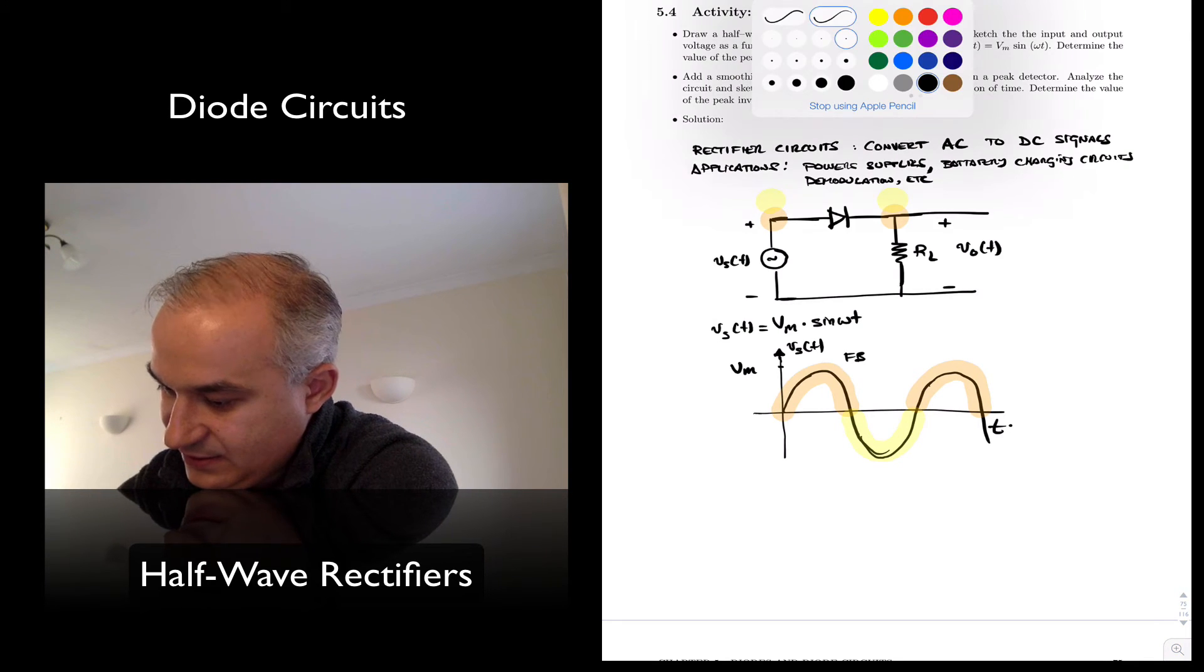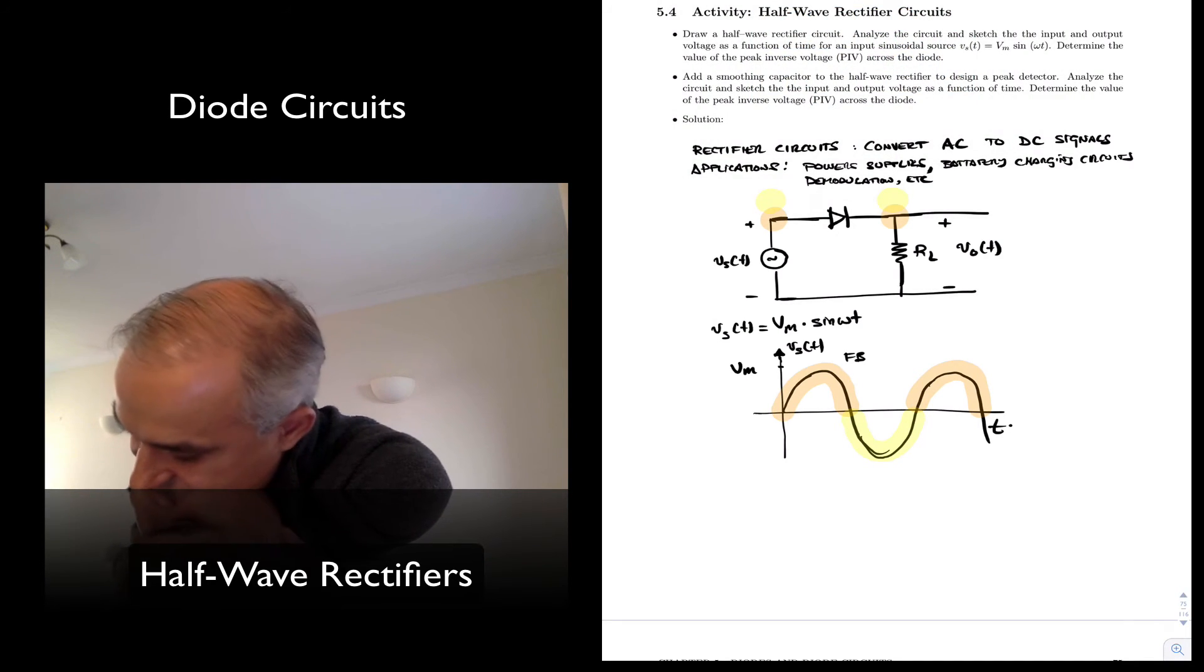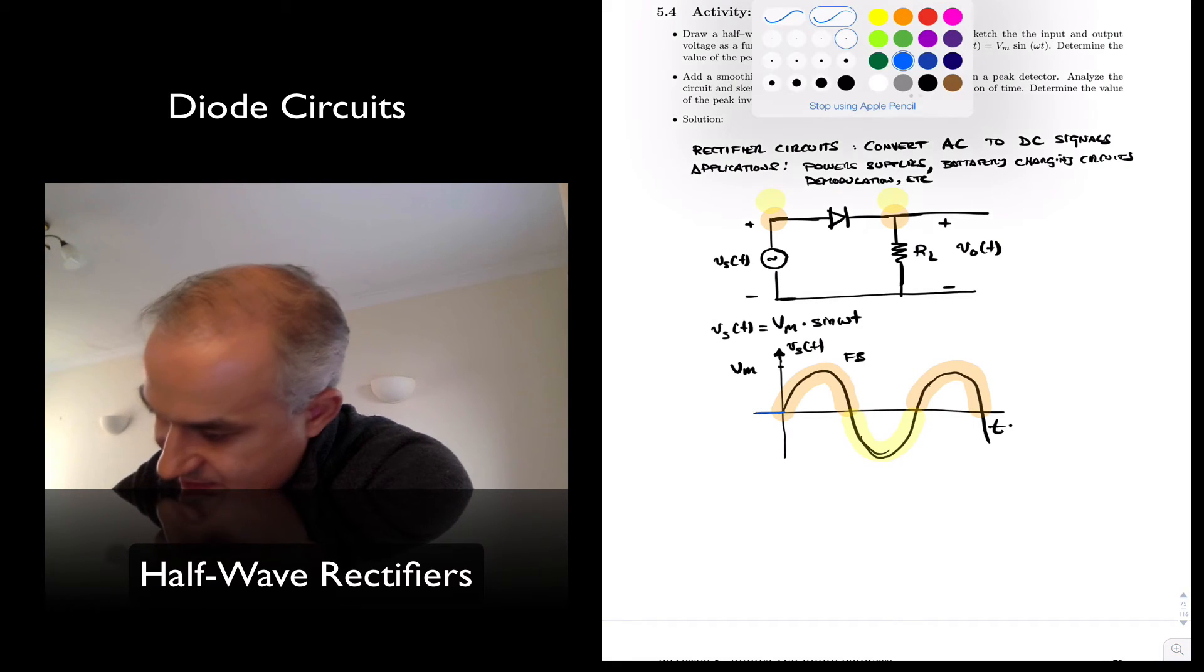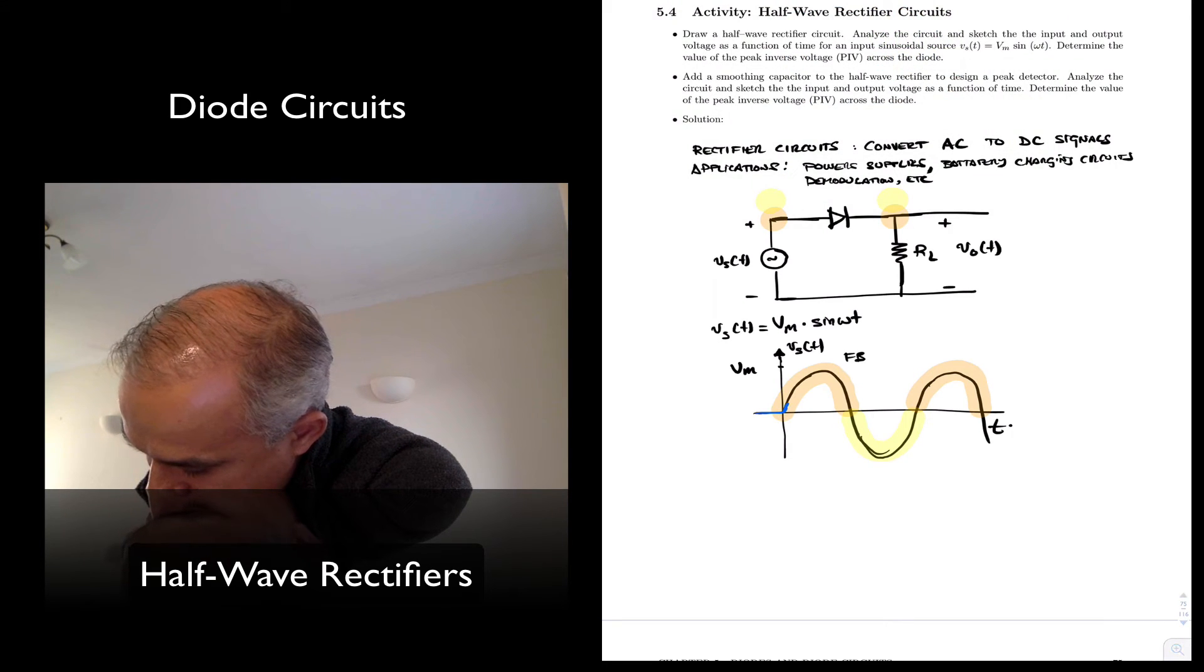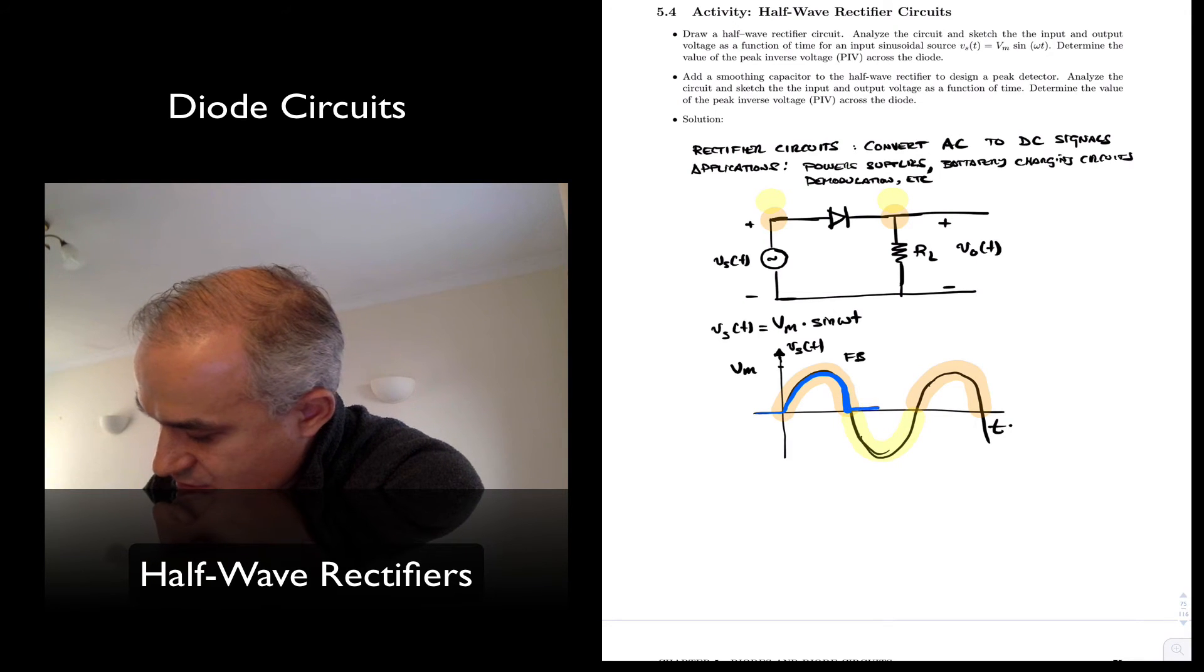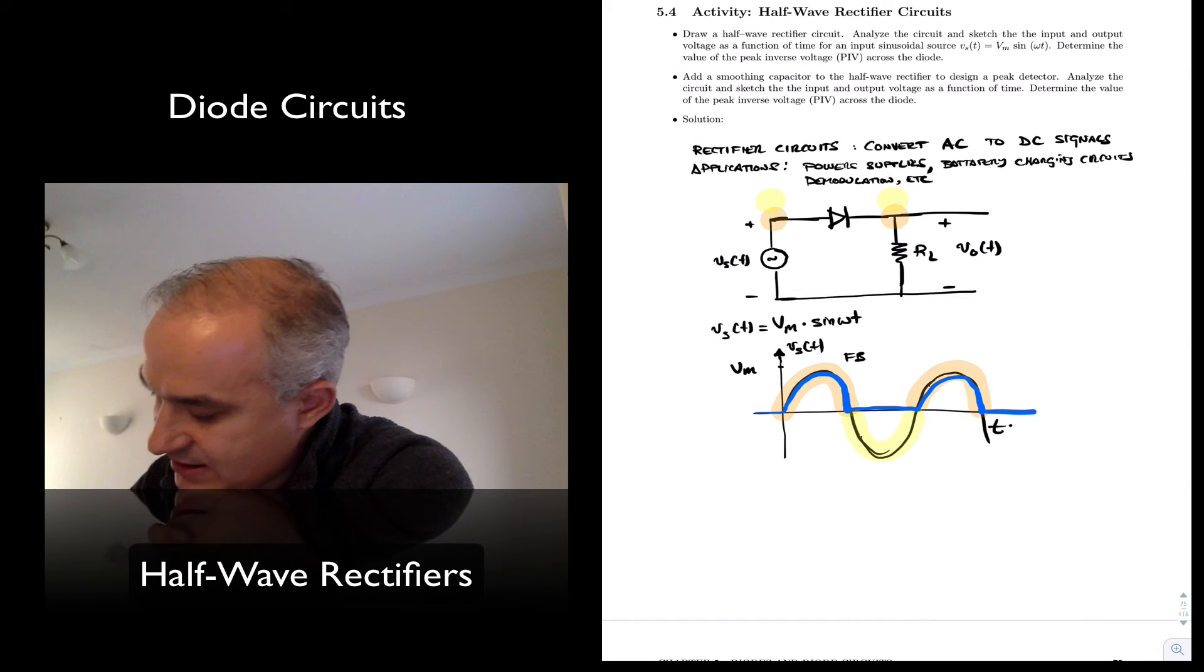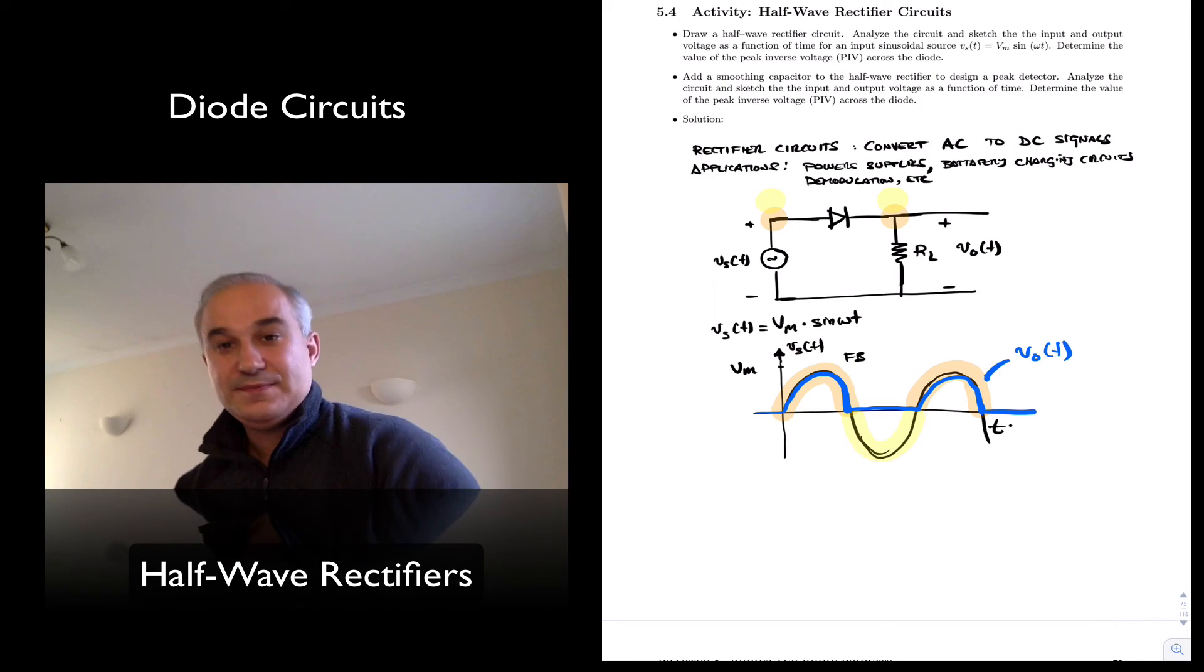...is that you will get a waveform just like this. Let me make it a little bit thicker. Conducts, open circuit. Conducts, open circuit. And this will represent the output voltage using the ideal model.